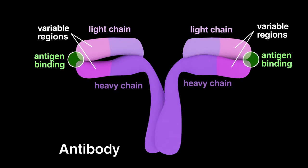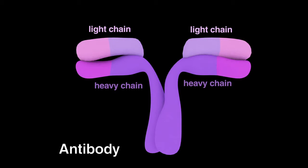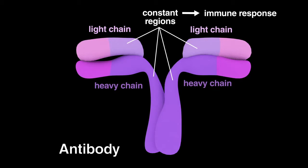Variable regions are involved in antigen binding. The other regions of the polypeptide chains vary very little in sequence among different antibodies from the same species and are called constant regions. The constant regions are responsible for interacting with effector proteins that mediate the immune response.